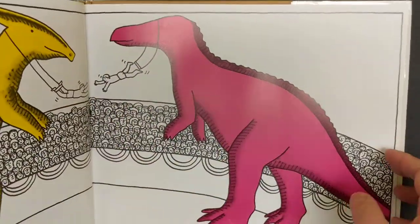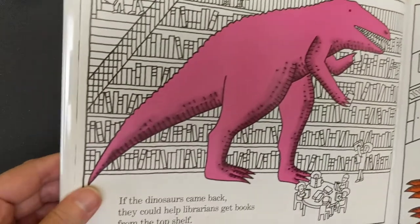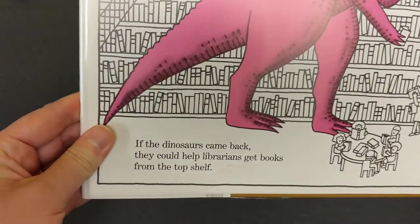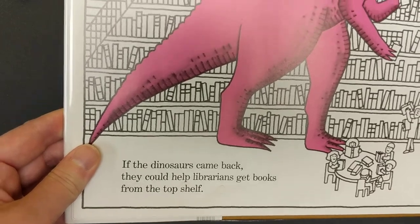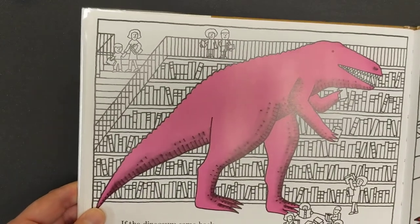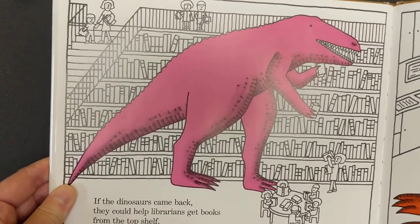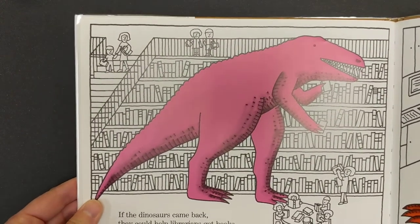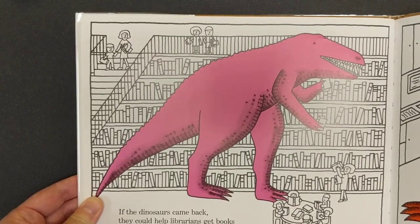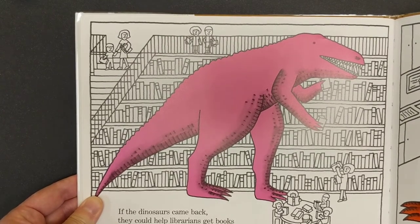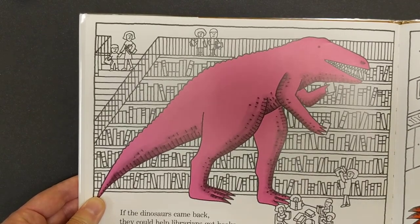As you can see, there's a lot of different ways to use this book as inspiration, keeping things pretty simple and being open to creativity. Of course, I'm going to end on my favorite: if the dinosaurs came back, they could help librarians get books from the top shelf. Look at those helpful dinosaurs! Thank you so much for tuning in, everybody. If you try this project at home, we would love to see a picture of your artwork. You can share it on our Facebook page, and we hope that you will tune in for more fun virtual programs here at Whitefish Bay Public Library.